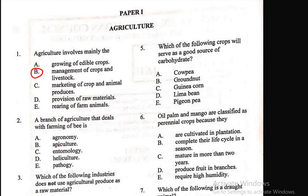Question 2: A branch of agriculture that deals with farming of bees is — A) agronomy, B) apiculture, C) entomology, D) heliculture, E) others. The right answer is B. Apiculture is simply a branch of agriculture that deals with farming of bees.